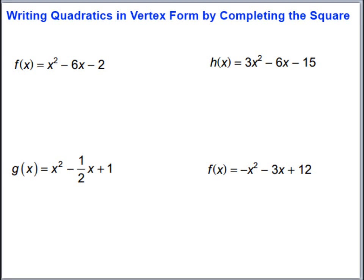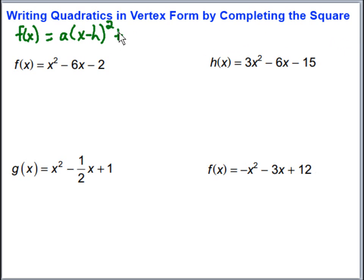In this video we're going to take a look at writing quadratic functions in vertex form by completing the square. A couple things that will be good to know first is what vertex form is. Vertex form is f of x equals a times the quantity x minus h squared plus k, where h and k is our vertex, so if we can get it to look like that we'll be able to easily pull out the vertex of our quadratic.